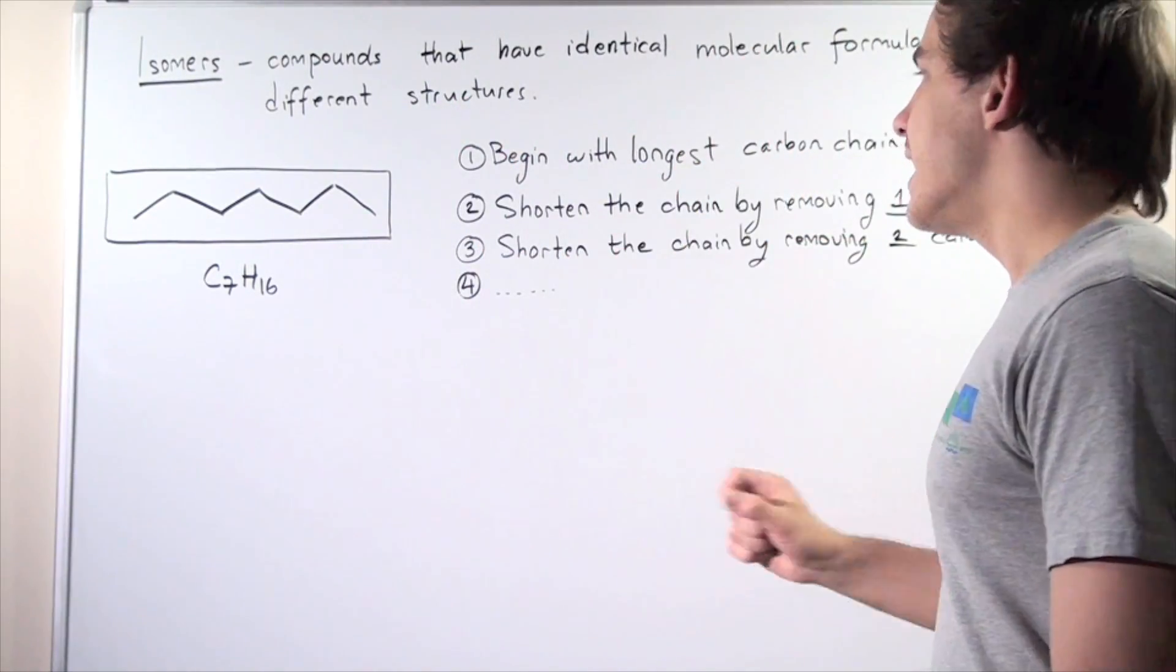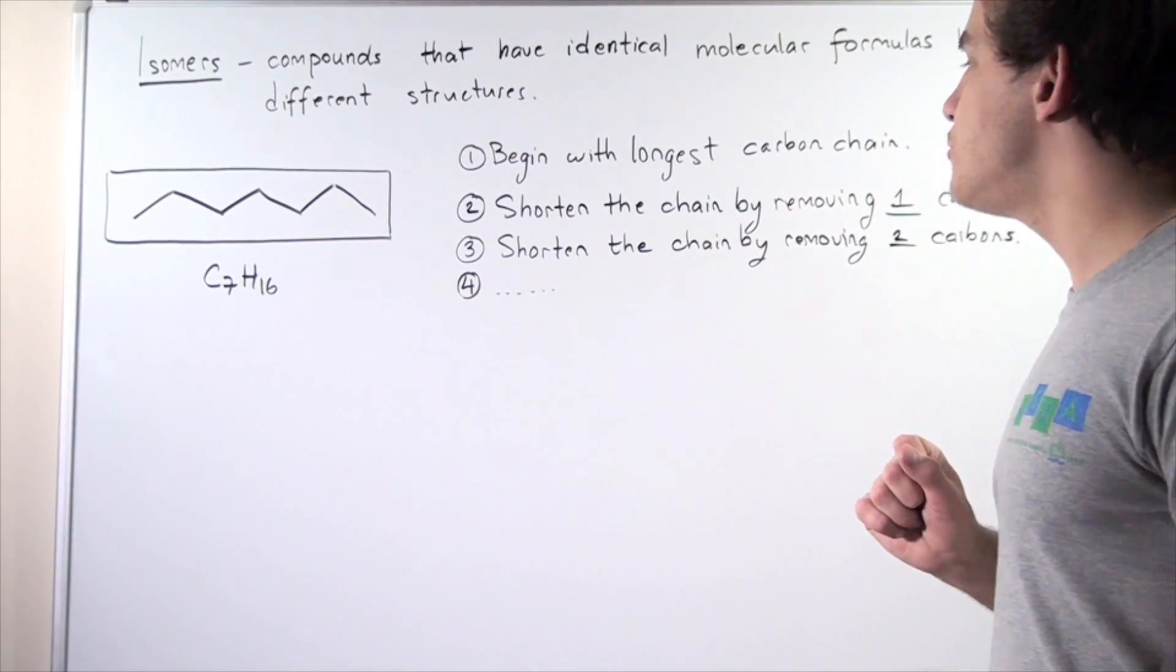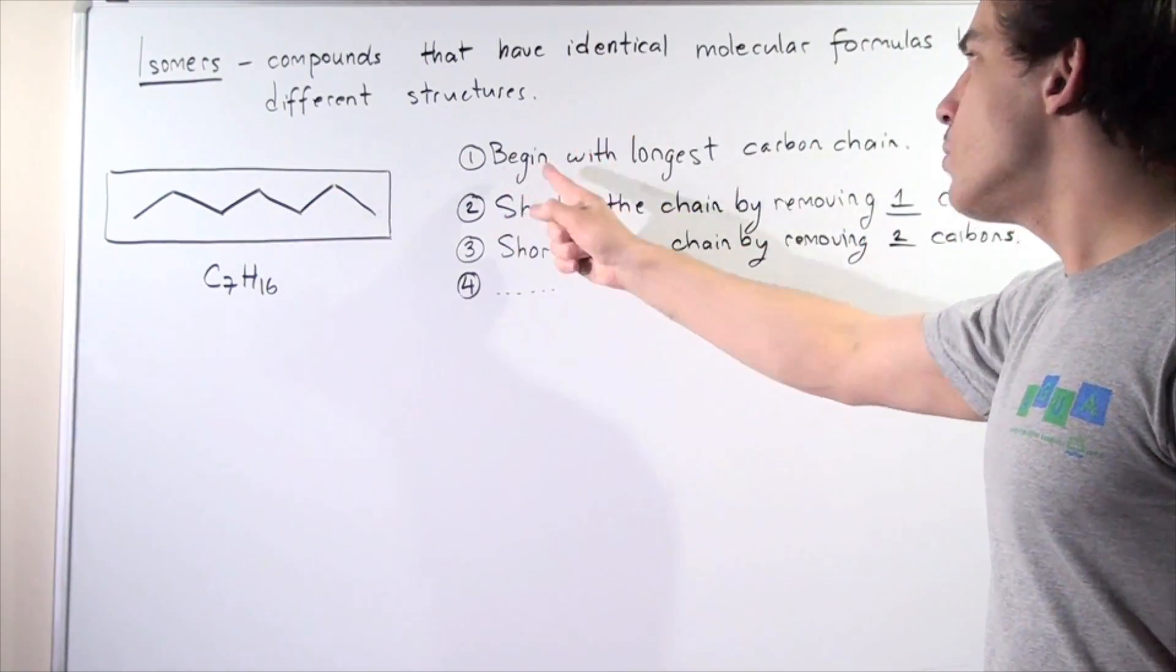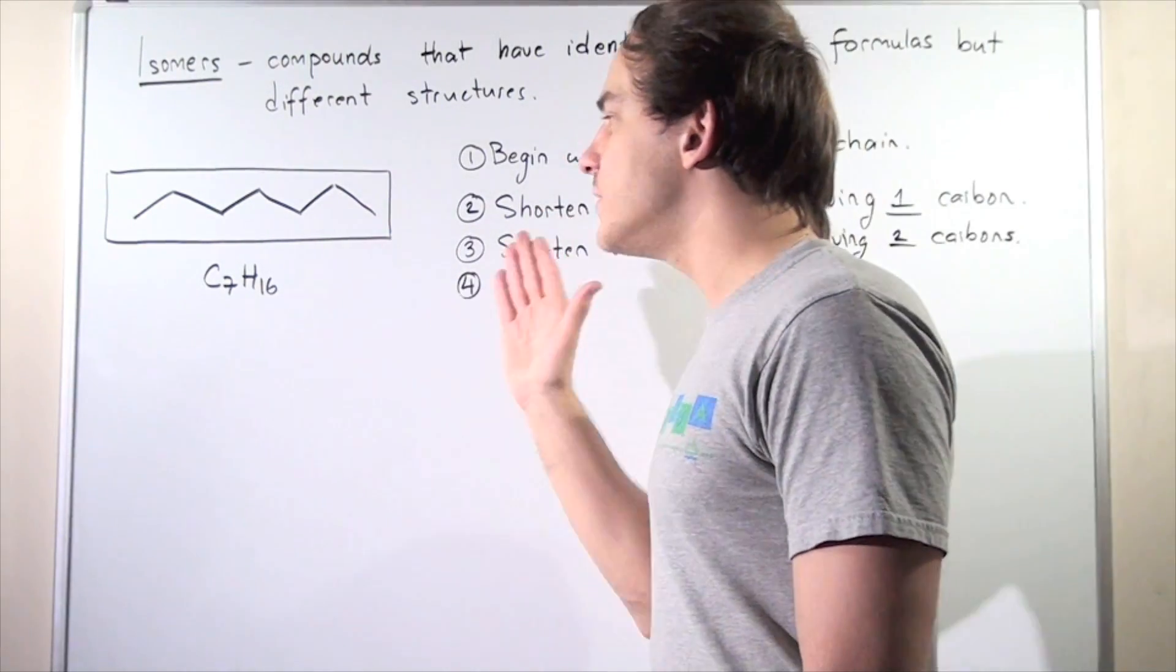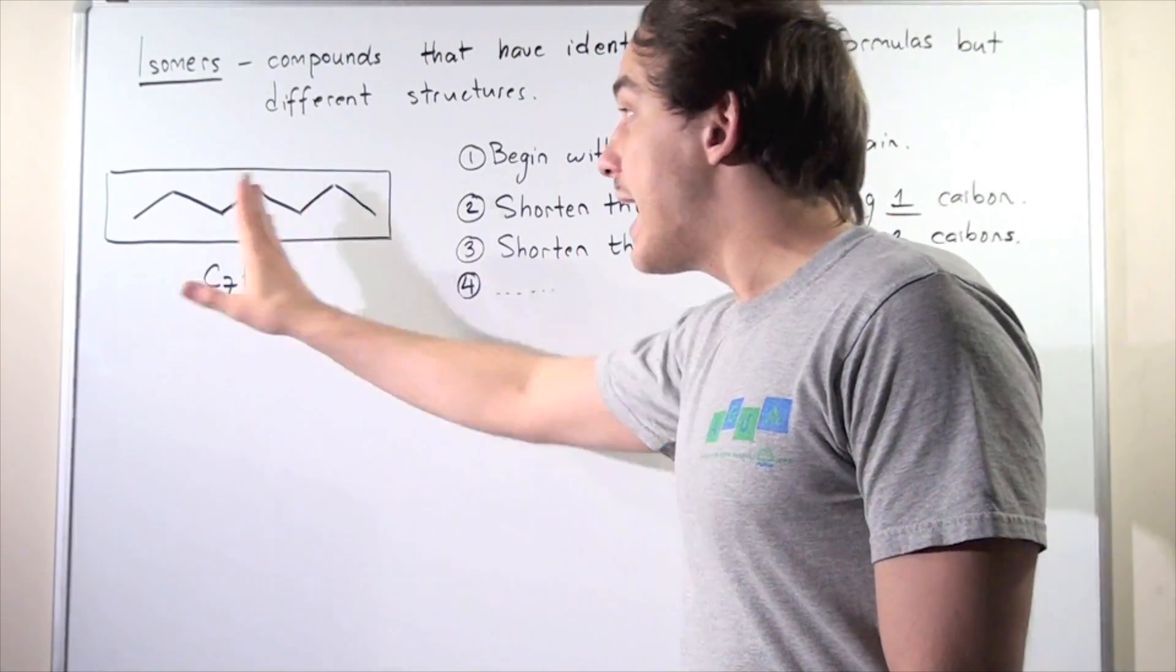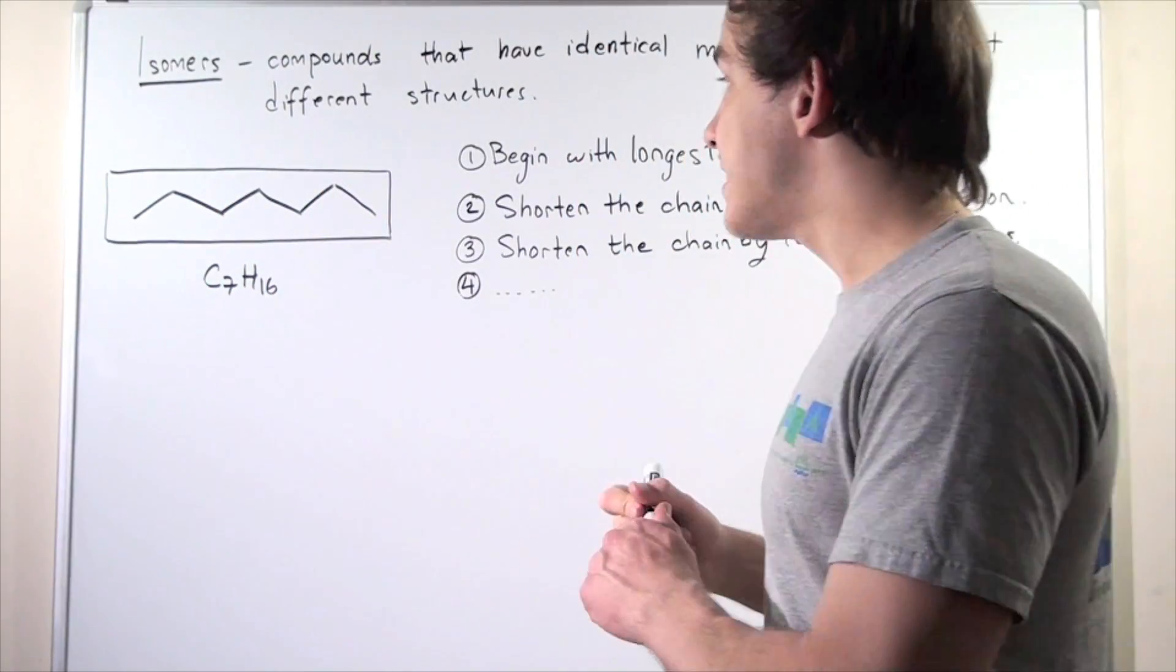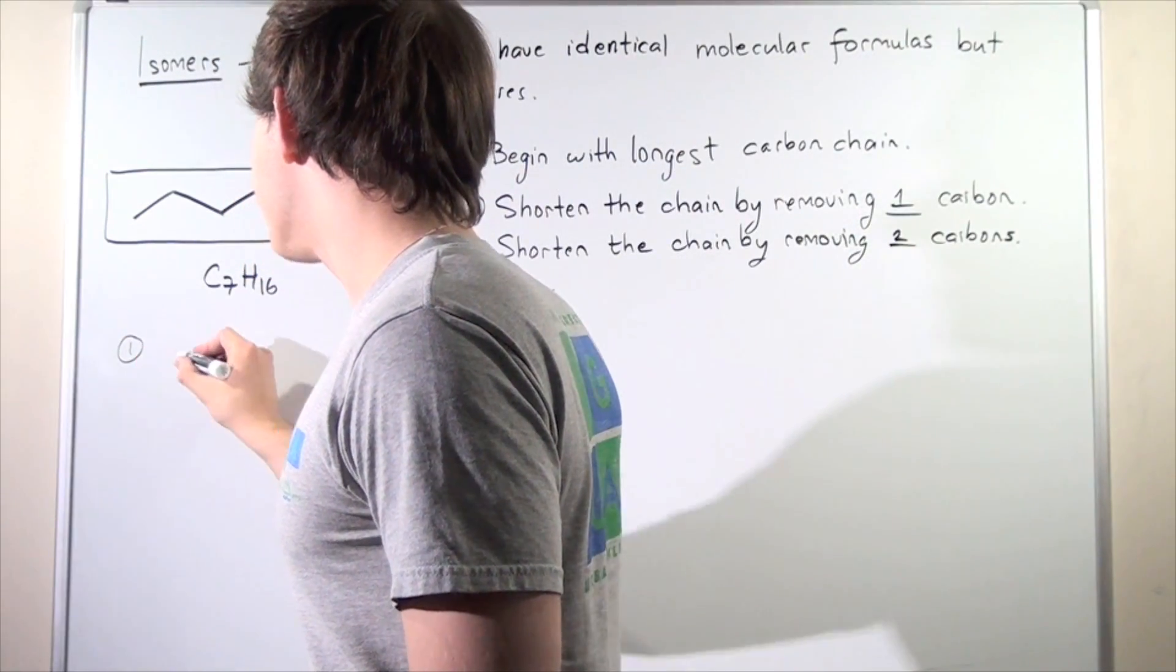So let's begin with step one. Now step one happens to be the easiest one. Begin with the longest carbon chain. So what's the longest carbon chain of our heptane molecule? Well, it's simply heptane itself. So in step one, our first isomer is heptane itself.